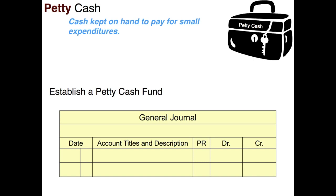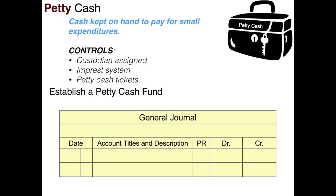Controls that you can still have over the petty cash fund include a custodian — one person assigned to control this petty cash and review all the tickets. There's also something called an impressed system that petty cash typically follows. The impressed system simply means that if you have a petty cash fund with $200 in it, it stays at $200. So when transactions affect the petty cash fund, they're actually affecting cash, not petty cash.